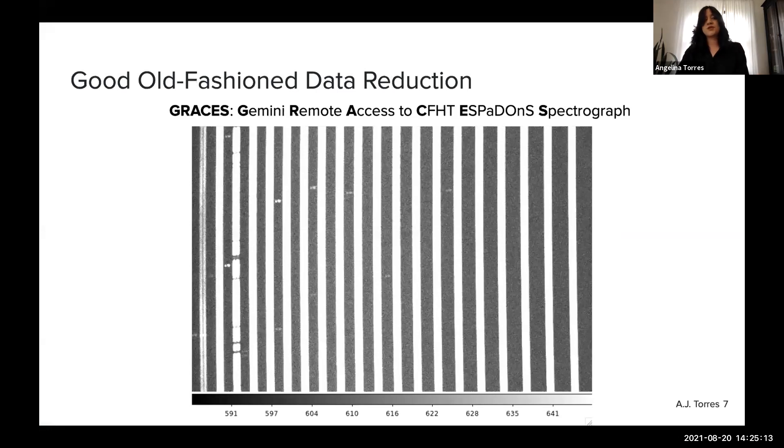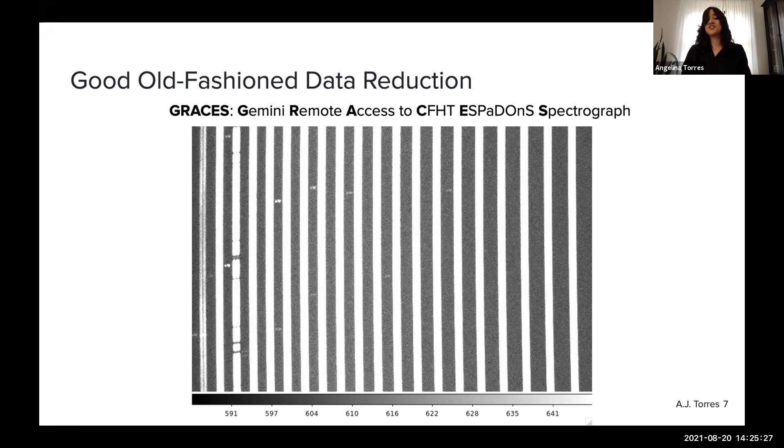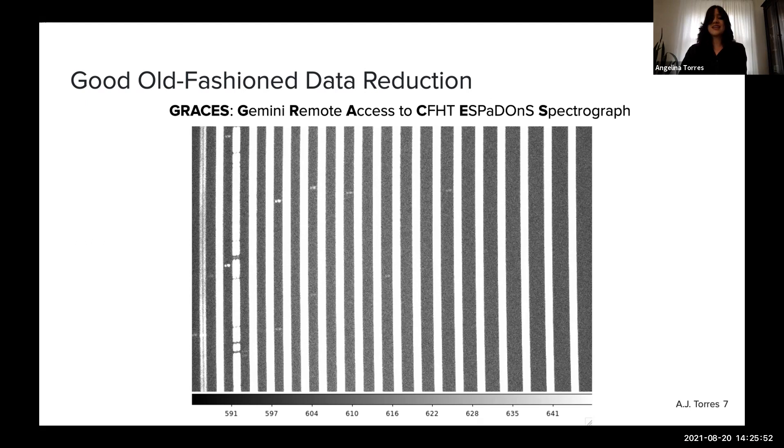We start out with some good old-fashioned data reduction. The Gemini North Telescope has an instrument known as GRACES. GRACES collects echelle spectra. Echelle spectra are two-dimensional in terms of wavelength. They move from bluer to redder on both the x and the y-axis. Here we have an example of an echelle spectrum. Note that we see all these white bars. These are known as echelle orders. They're chunks of wavelengths that we can observe. They're spaced apart for easier visualization. Now, echelle spectra are great for collecting precise data. However, they're a little bit hard to analyze.